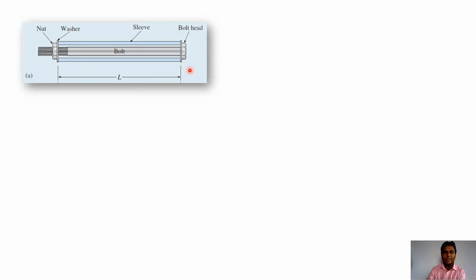While solving statically indeterminate problems, we need equations of equilibrium and also equations of deformations or displacements. Since both ends of the bars are fixed, it is not possible to directly get the equations of deformations. To get these deformation equations, we need to cut this assembly — a simple way is to remove the bolt head or the washer, so that the sleeve and bolt are free to expand or contract when subjected to the change in temperature.